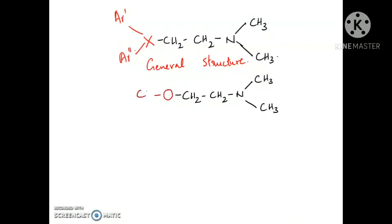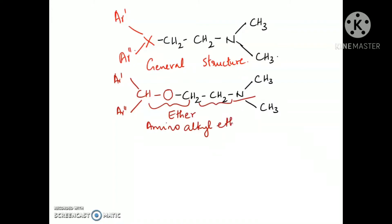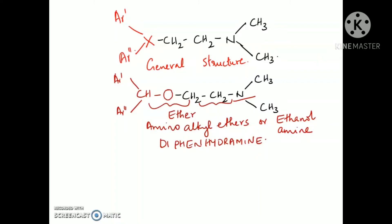If the X is an oxygen atom, then you will get an ether derivative. Ethers have a general formula R-O-R'. So you can name this class of compound as aminoalkyl ethers or as ethanolamine derivatives (CH2-CH2-OH). An example for this class of compound is diphenhydramine. The common brand name of diphenhydramine is Benadryl.